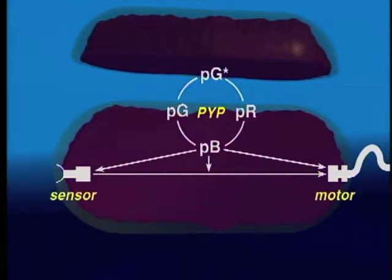In the case of E. Halifilla, blue light is absorbed by molecules of photoactive yellow protein, PYP, localized near the cell membrane.